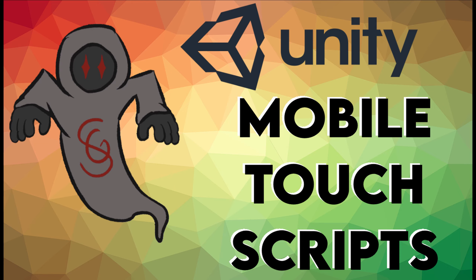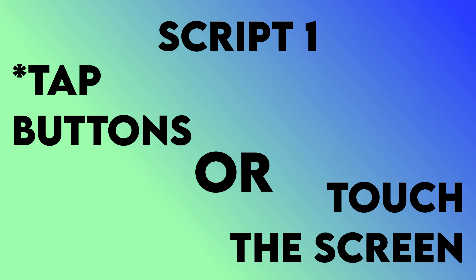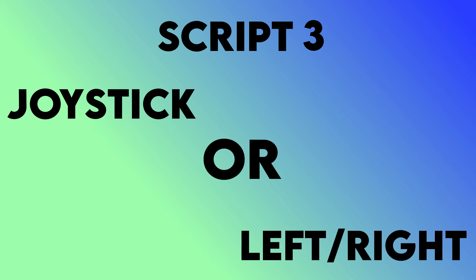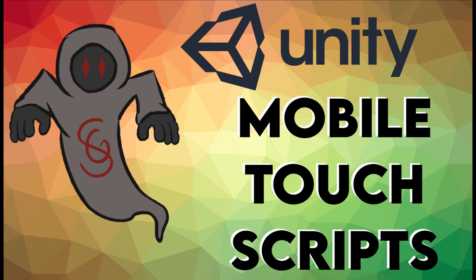So Android development recently piqued my interest. I've been messing around with different mobile touch functions and there are three I would like to show you today. And if you like it enough, maybe I'll continue this mobile development series. The first one is going to be a basic tap using buttons — I'll also show you code so you can get a tap for the whole screen, not just a button. The second script will allow you to move a game object around the screen by sliding it with your finger. And the third one will be a finger directional pad, so you can use either a joystick or touch the left or right side of the screen to move your character.